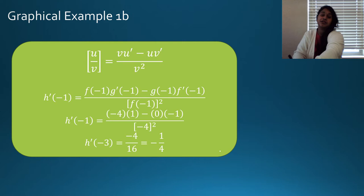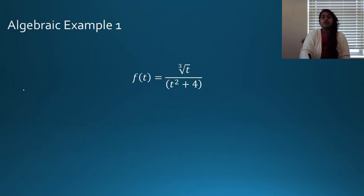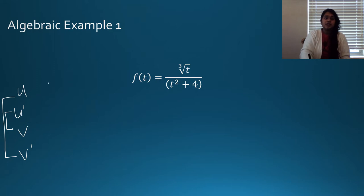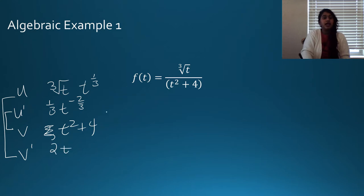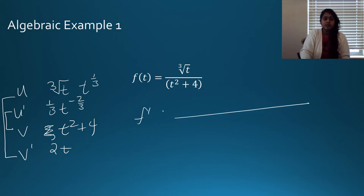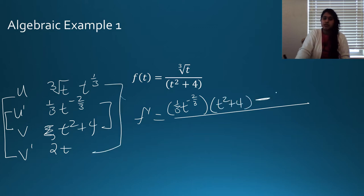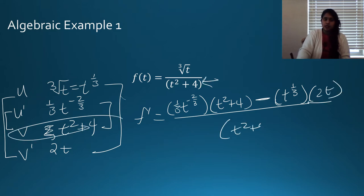Now an algebraic example. I'm going to list out my parts: u is the cube root of t, which is t to the 1/3, and u prime is 1/3 t to the negative 2/3. v is t squared plus 4, and v prime is 2t. So f prime is going to be: 1/3 t to the negative 2/3 times (t squared plus 4), minus the original top times 2t, all over the original bottom — (t squared plus 4) squared.